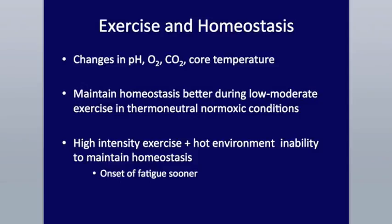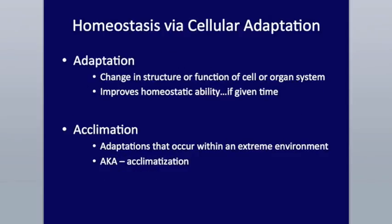During high intensity exercise, especially in a hot environment, your body has a really tough time maintaining homeostasis, so you're going to fatigue a little bit quicker. However, given a certain amount of time, you are able to acclimate or become accustomed to these types of environments, especially with high intensity exercise. This adaptation usually occurs at the cellular level — a change in the structure and function of the cell or organ system — which improves the homeostatic ability.